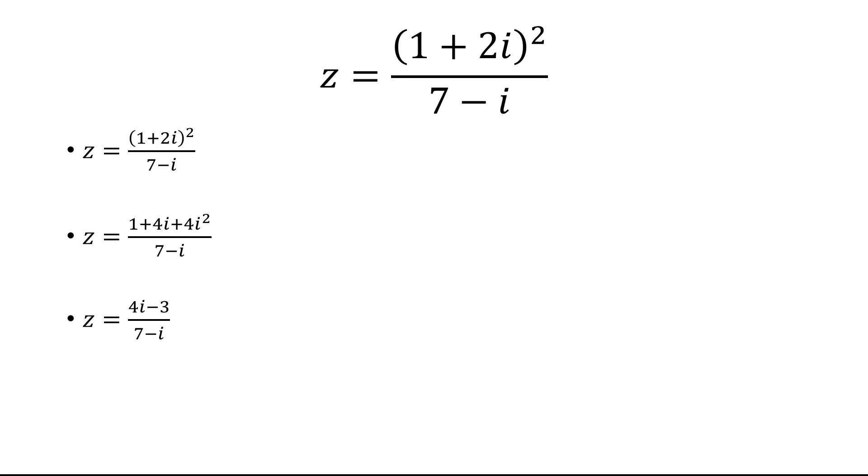Now we want to eliminate the i in the denominator. So we'll multiply the top and bottom by the conjugate of the denominator, which is 7 plus i.